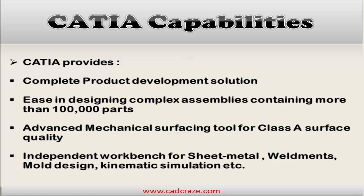Just to give an idea about capabilities, CATIA is the only software that provides a complete product lifecycle management solution — right from its conceptual design, through its manufacturing and during its serviceable life, in a fully associative and integrated manner. CATIA can also handle large complex assemblies which contain more than hundreds of thousands of parts with great ease.